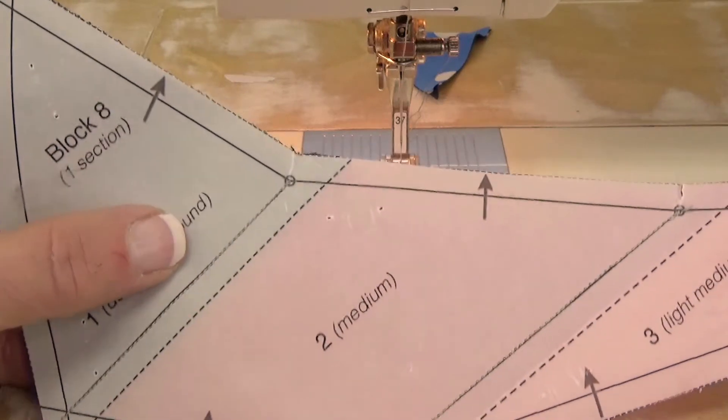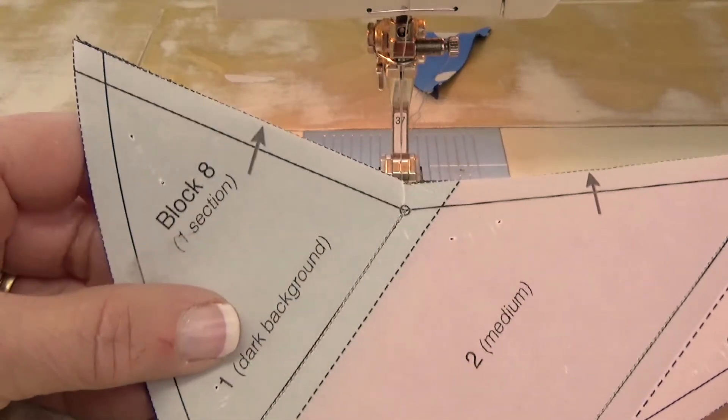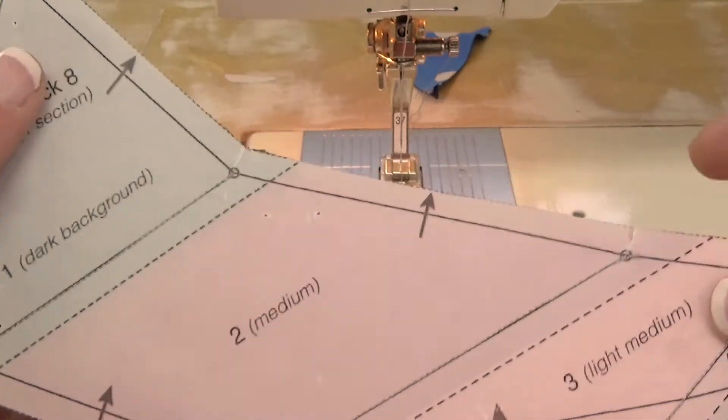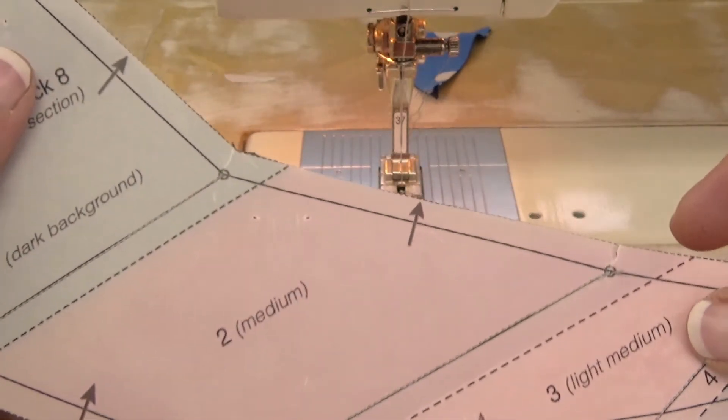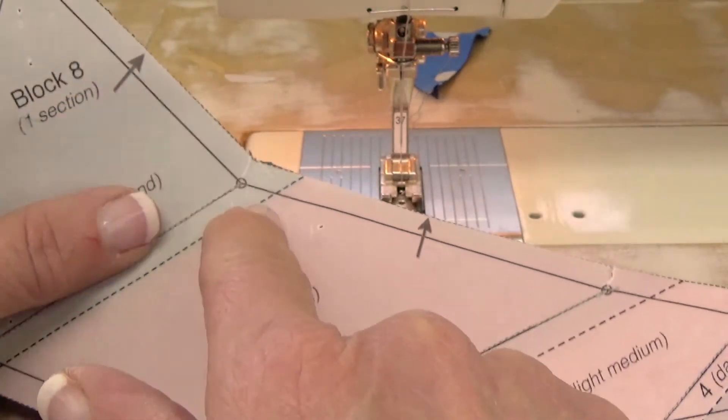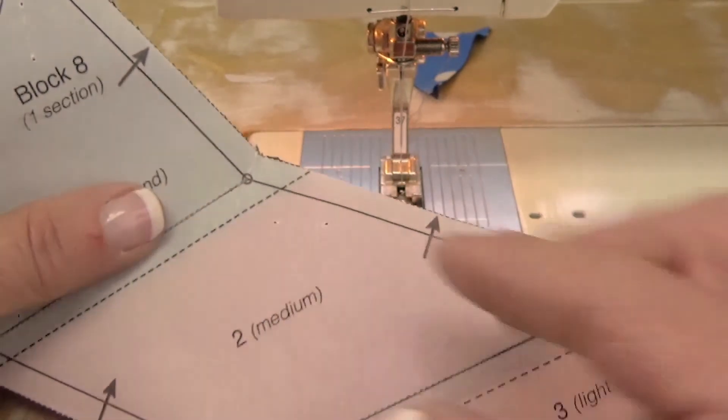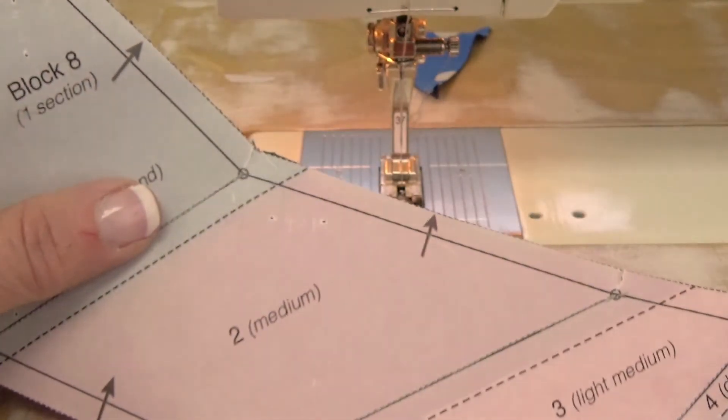Hello everyone. I want to show you how to sew together the ring sections of block number eight. Now you already know that these sides are not one straight line. There's three different lines.